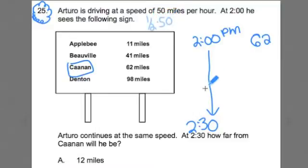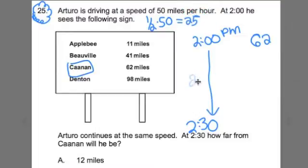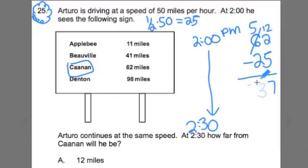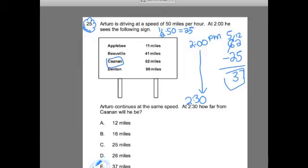Wouldn't it be half of 50? If it was a full hour it would be 50 miles, but if it's a half an hour it's going to be half of 50, which is 25 miles. So he's actually gone 25 miles in that distance — he's 25 miles closer to this town. When we do our subtraction, 62 minus 25: 12 minus 5 is 7, this becomes a 5, 5 minus 2 is 3. We find out that he is 37 miles away.